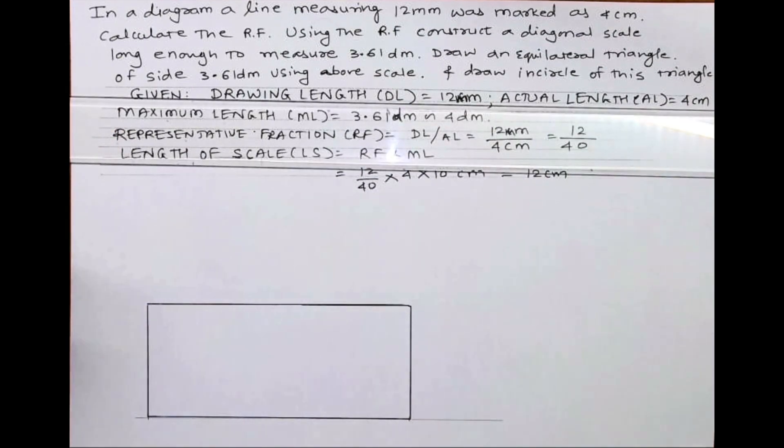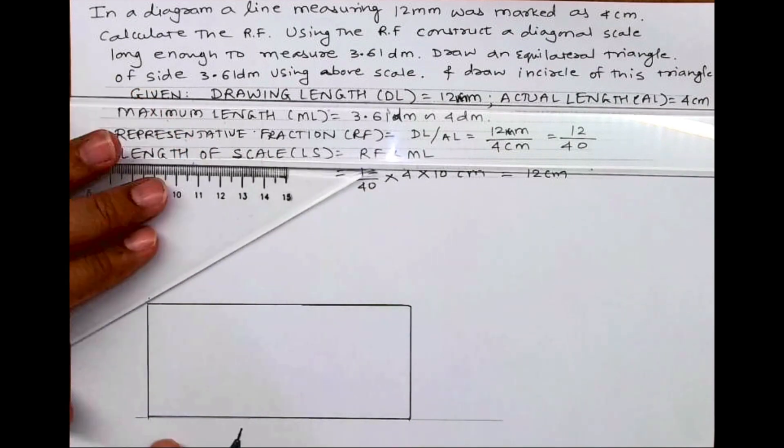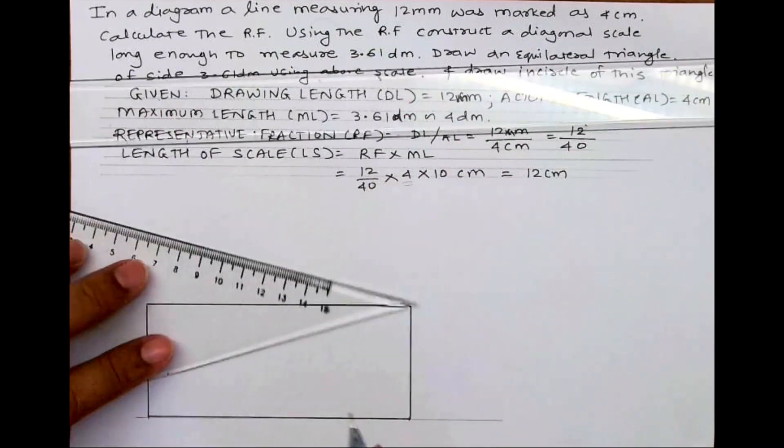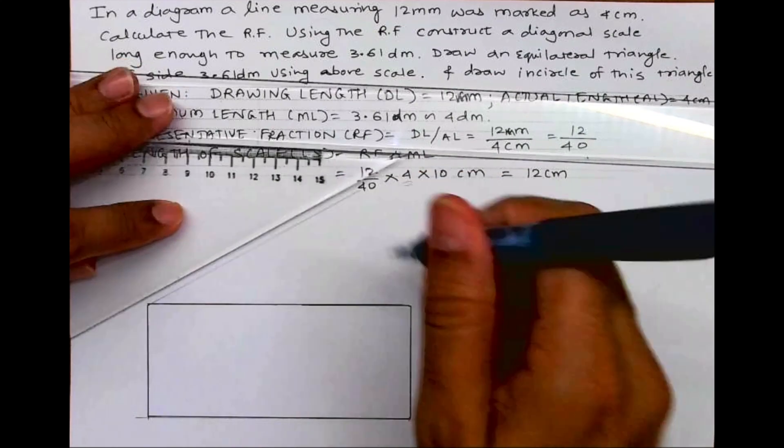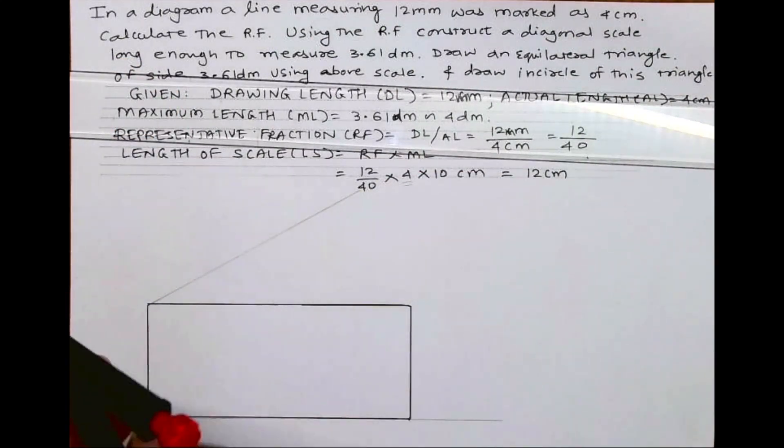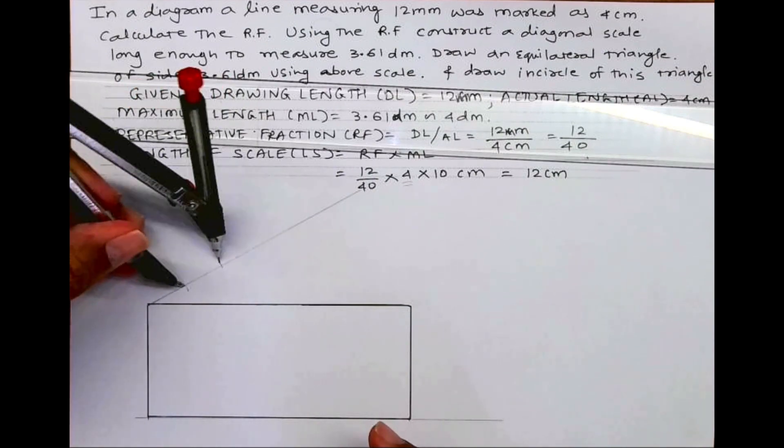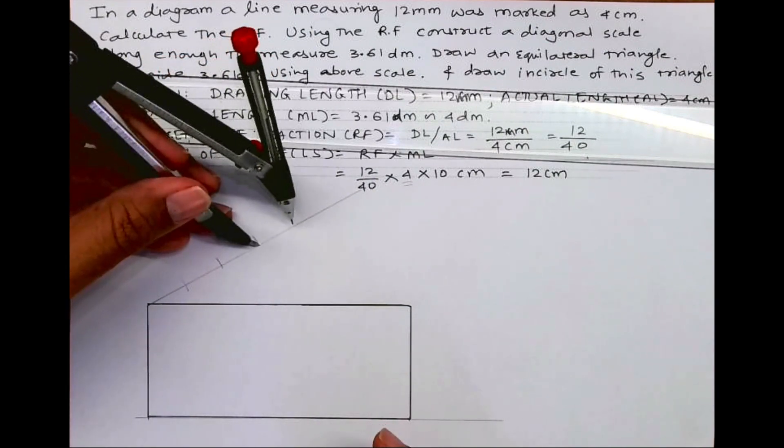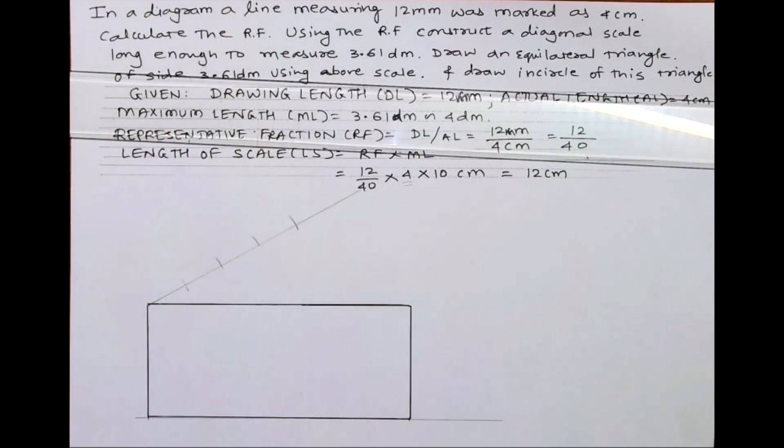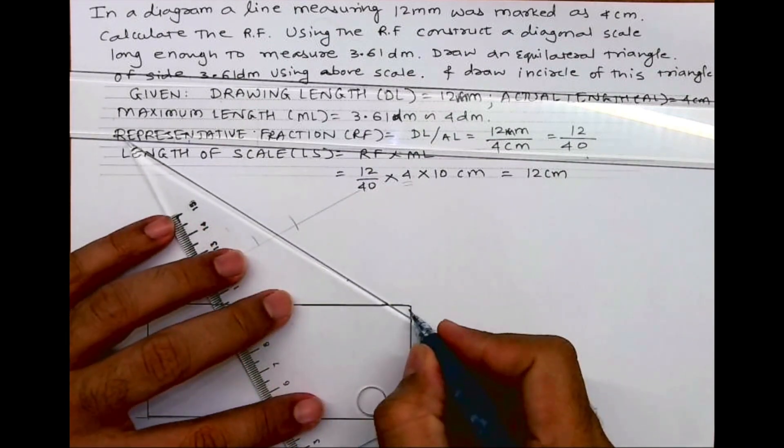In diagonal scale we take height 5 centimeter, so you've got 12 centimeter by 5 centimeter. Now we'll divide this into 4 parts because maximum length is 4 decimeter. We'll cut 1, 2, 3, 4, then we'll join last to last point and draw parallel lines.